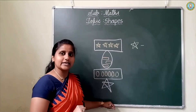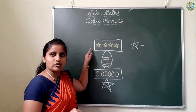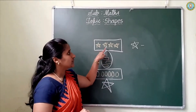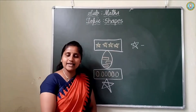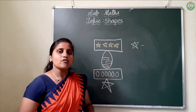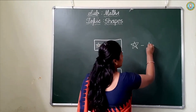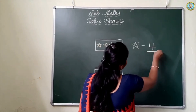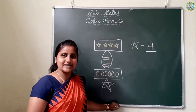1, 2, 3, 4. How many stars are there? There are 4 stars. How many stars are there? There are 4 stars. Got it, children?